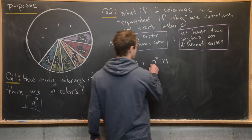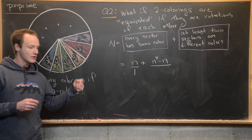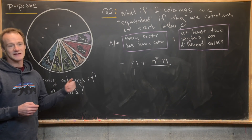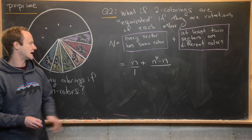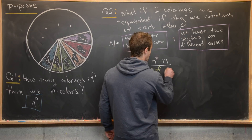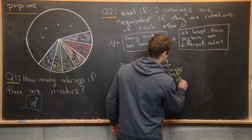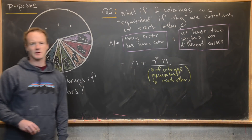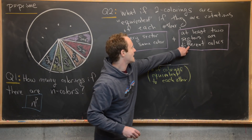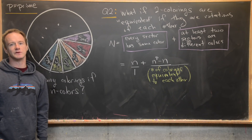Next, we need to figure out what to divide the second quantity by. We don't know a priori that we can divide all these things in the other class by the same number, but we will prove that we can. What we'll want to divide by is the number of colorings equivalent to each other, and we need to argue this number is the same for every coloring in this class.